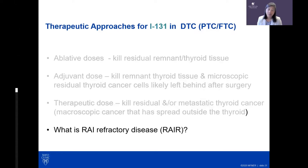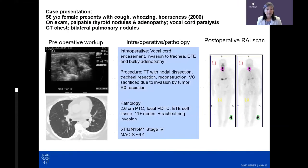Now we turn to radioiodine refractory disease. Unfortunately, many patients with advanced disease become refractory — the iodine simply doesn't work. A 58-year-old female presented with cough, wheezing, and hoarseness. She was found to have palpable nodules on exam, vocal cord paralysis from tumor invading her recurrent laryngeal nerve, and on CT scan, lung nodules consistent with metastatic thyroid cancer.